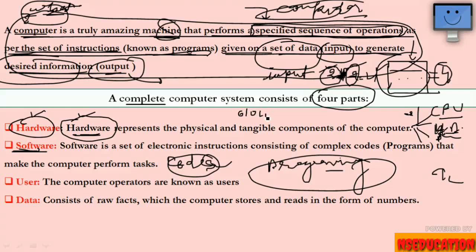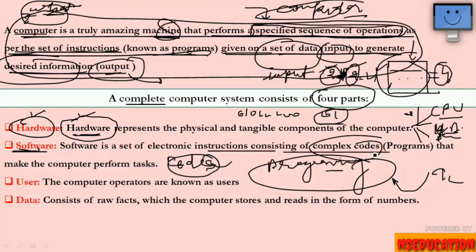The processor understands only 0 or 1. So programming is given in 0 and 1. After programming, the programming codes are converted so the computer can understand the inputs and produce the required output. Programming languages like C, C++, Java, .NET, Visual Basic are used, and the code is converted to 0 and 1 for the processor.